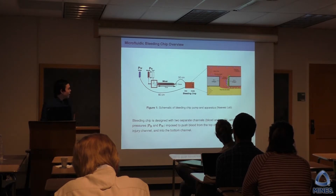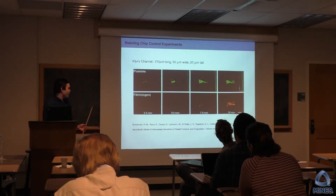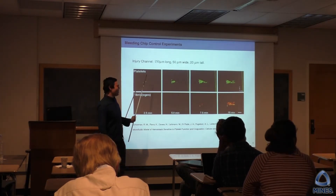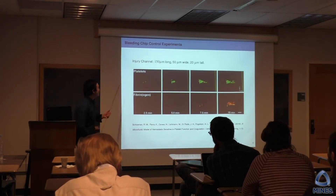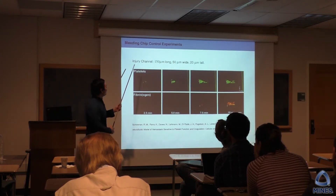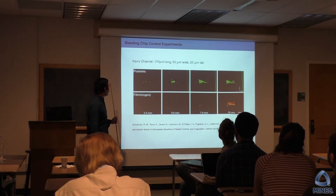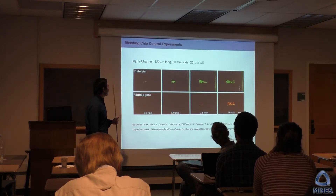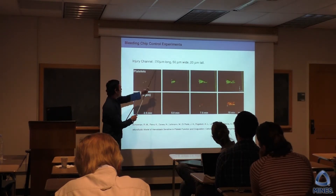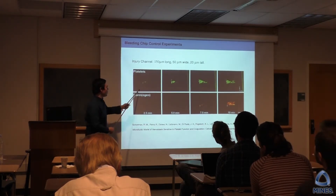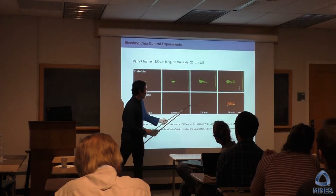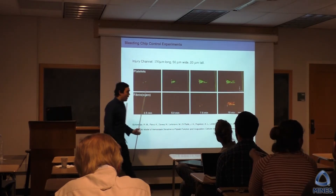We had a paper published last year with experimental images from our collaborators of this bleeding chip. This is an H shape — on the right is the blood channel, on the left is the wash channel — and we're flowing from right to left through the injury. From the images over time, you can see that the channel will plug up after about 10 minutes.